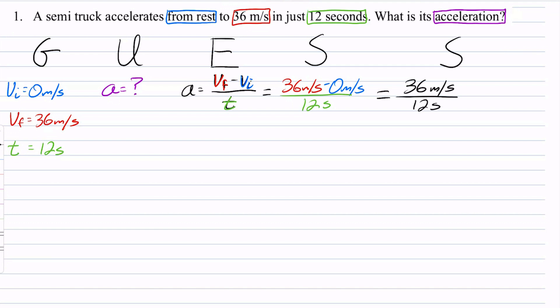And I can simplify that even more. I can say that 36 over 12 is equal to 3 over 1. And that's meters per second. And that's over 1 second. And so that equals 3 meters per second per second. Or even simpler, 3 meters per second squared. And that is my answer.